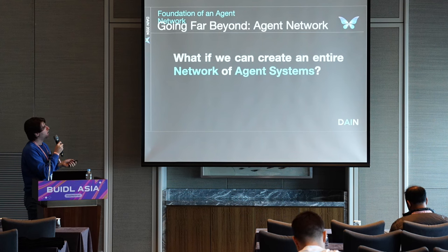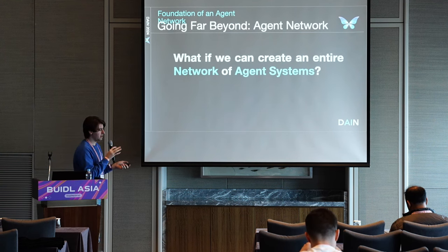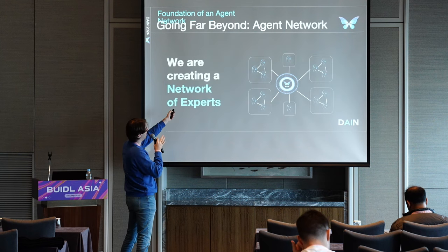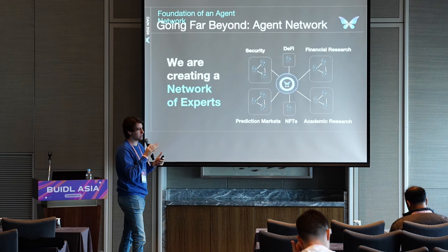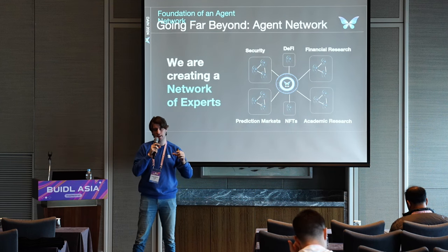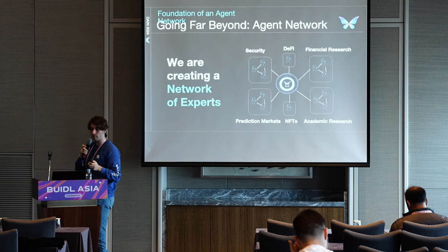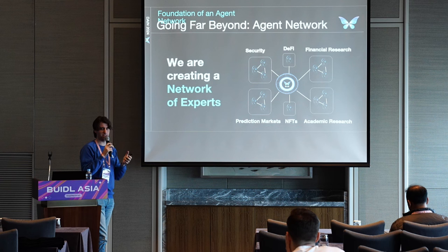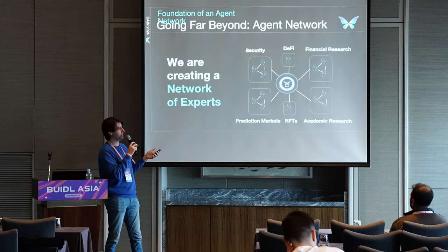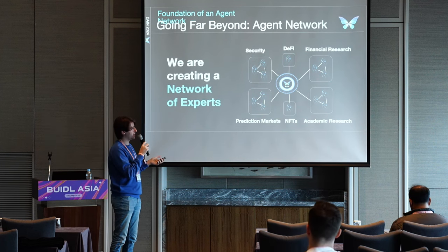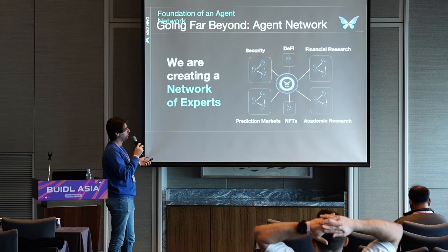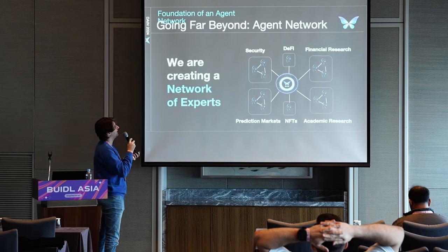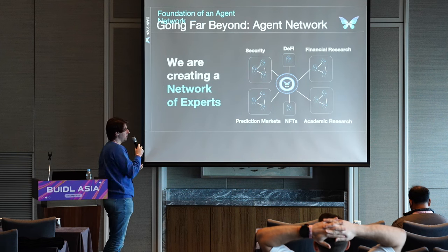Going further, why not create an entire network of agent systems? A network where they can specialize in something — multiple organizations, each specializing in areas like security, DeFi, financial research, prediction markets, NFTs, or academic research. Your entire organization can specialize in something and interact with different organizations. At Dane, we are actually creating a network of experts, where organizations specialize in topics such as auditing smart contracts, researching crypto or finance data, and prediction markets to have the most real-time data possible. This is limitless — you can have as many category experts as you want, depending on demand and supply.